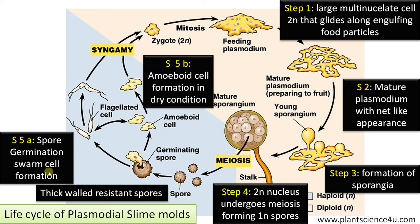To summarize: First, there is a feeding plasmodium that moves around, engulfing food particles including bacteria. At maturity, it forms a network-like structure — the beginning of fruiting body formation. When there is food scarcity, it starts producing sporangia, which are spore-producing structures with a stalk and a head. Many nuclei move to the head region and undergo meiosis, forming haploid spores. The spores are highly resistant and can withstand unfavorable conditions. On return of favorable conditions, they germinate — forming swarm cells when there is enough moisture, or amoeboid cells in dry conditions.